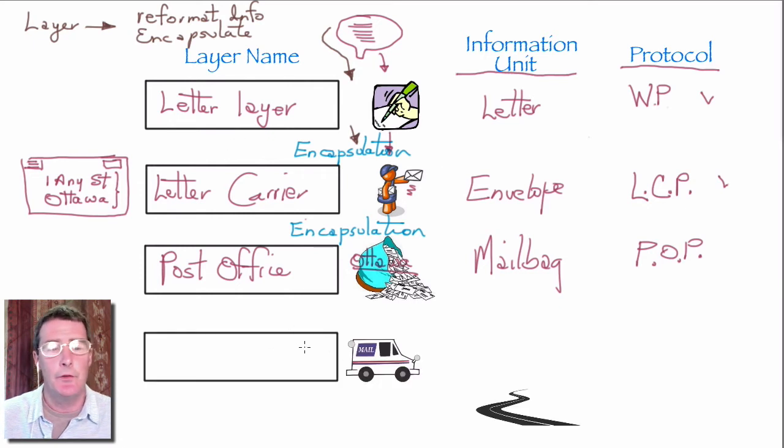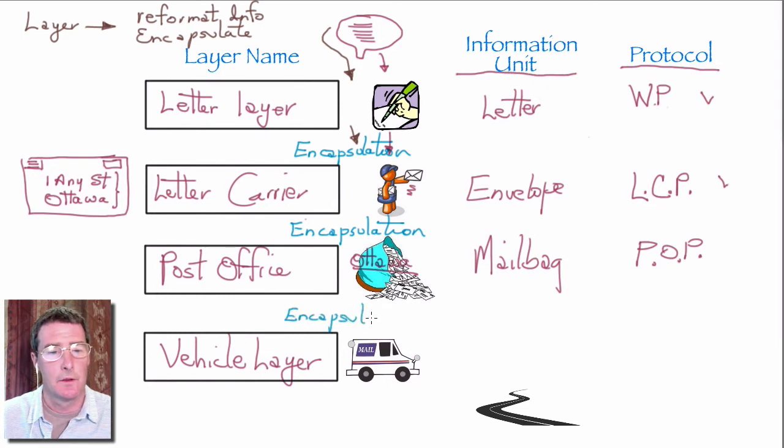Finally, we need some way to get the mail bags actually delivered to destination towns. We're going to call this the vehicle layer. We're going to purchase some trucks. They're going to contain mail bags and they're going to deliver them to the various towns. Again, what we see here is encapsulation. The mail bags are going to be encapsulated inside the mail trucks. Our information unit here is the truck.